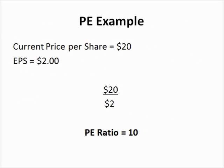Just as we performed with the earnings per share example, we will now work through a price-to-earnings ratio example. Let's define the variables: the current price per share is $20, and we have already determined the EPS to be $2. By doing that simple equation — current price over earnings per share — we see that 20 divided by 2 equals a P/E ratio of 10. That P/E ratio of 10 is useful when compared to other P/E ratios within the company and specifically within the industry.